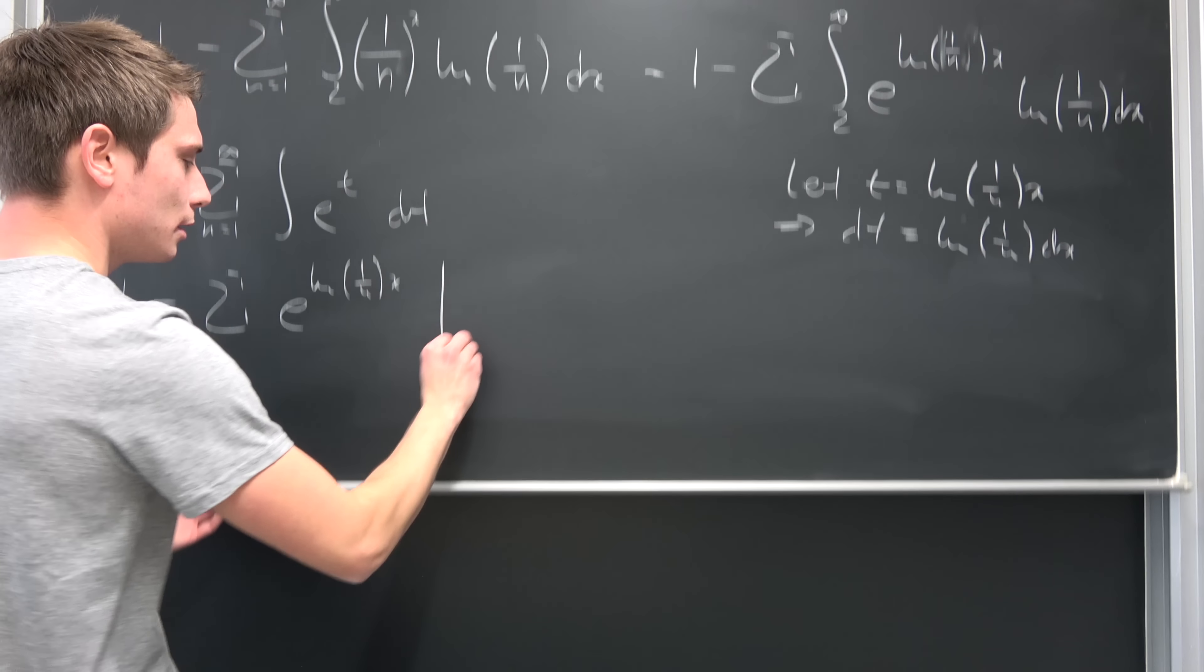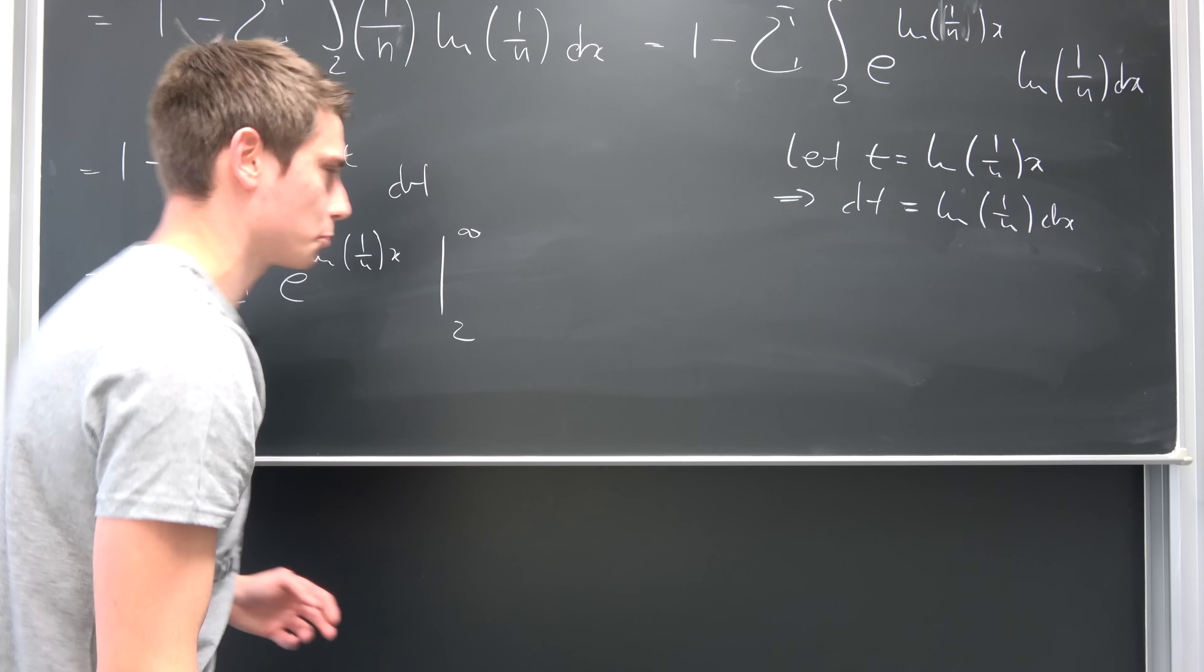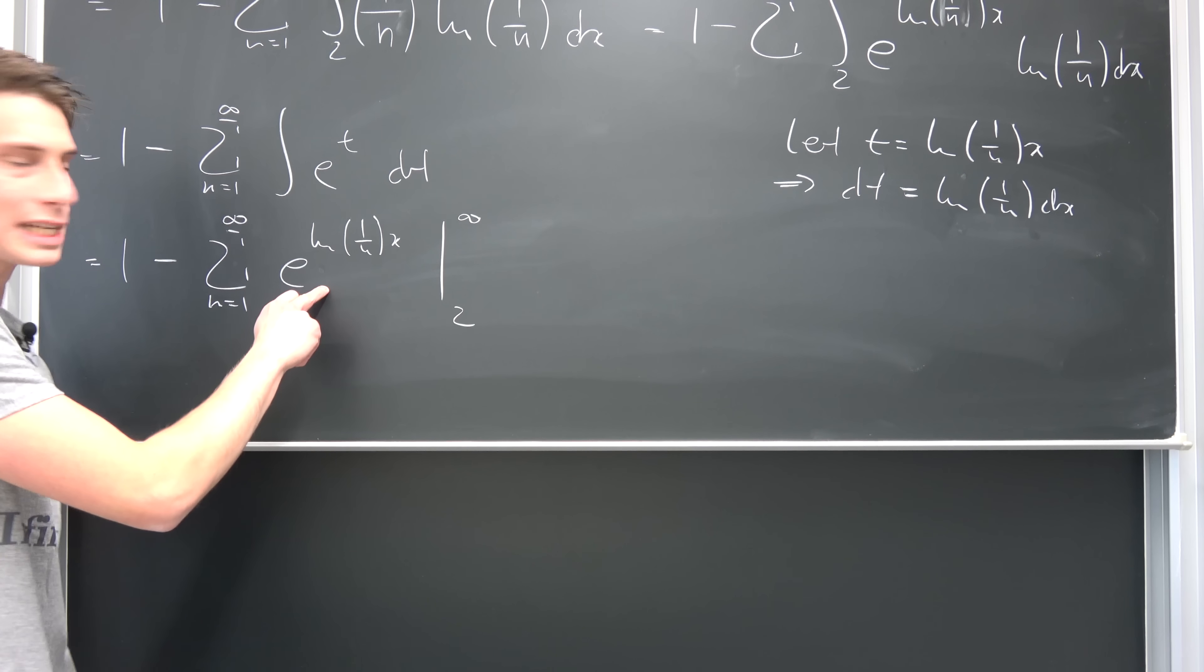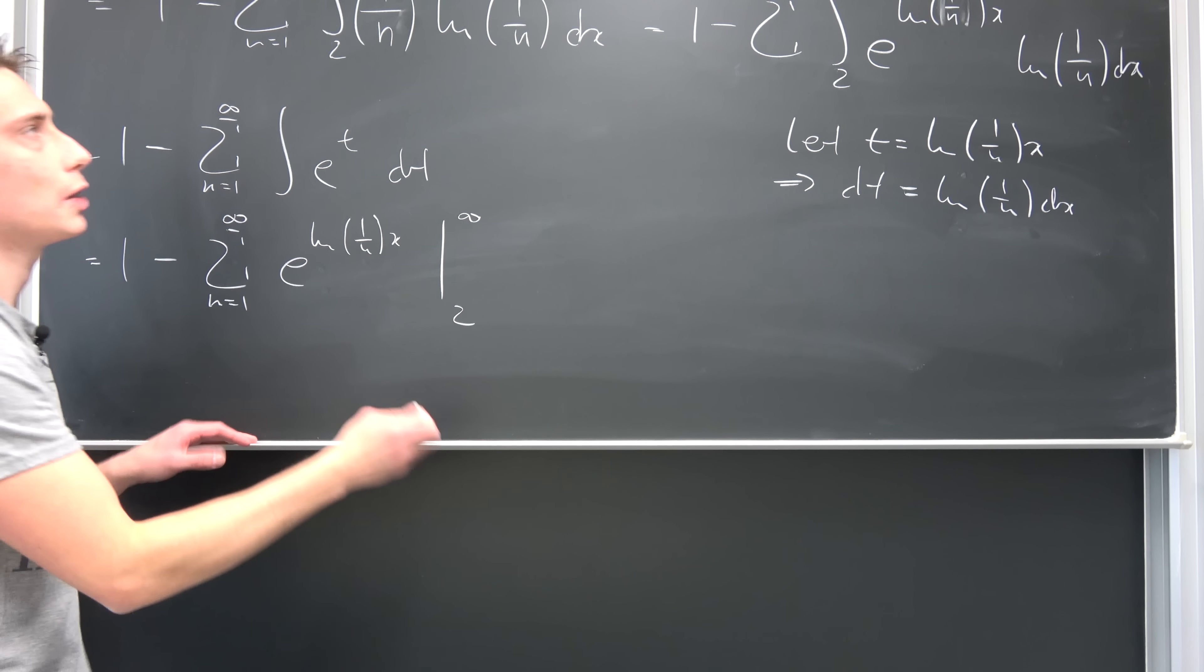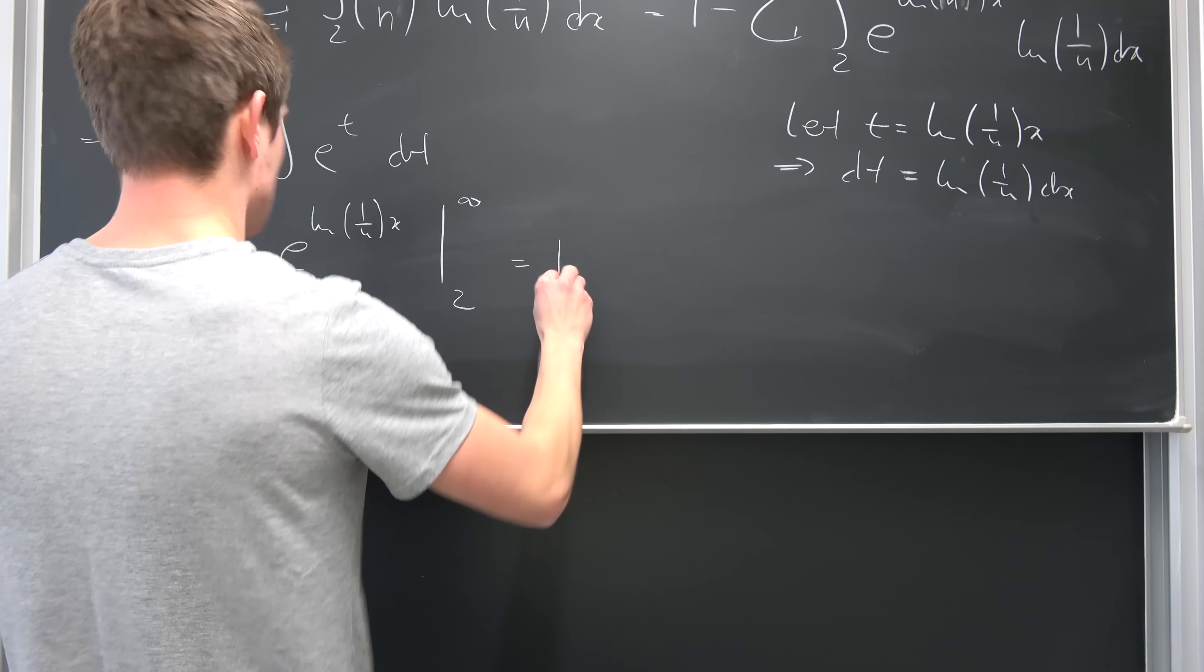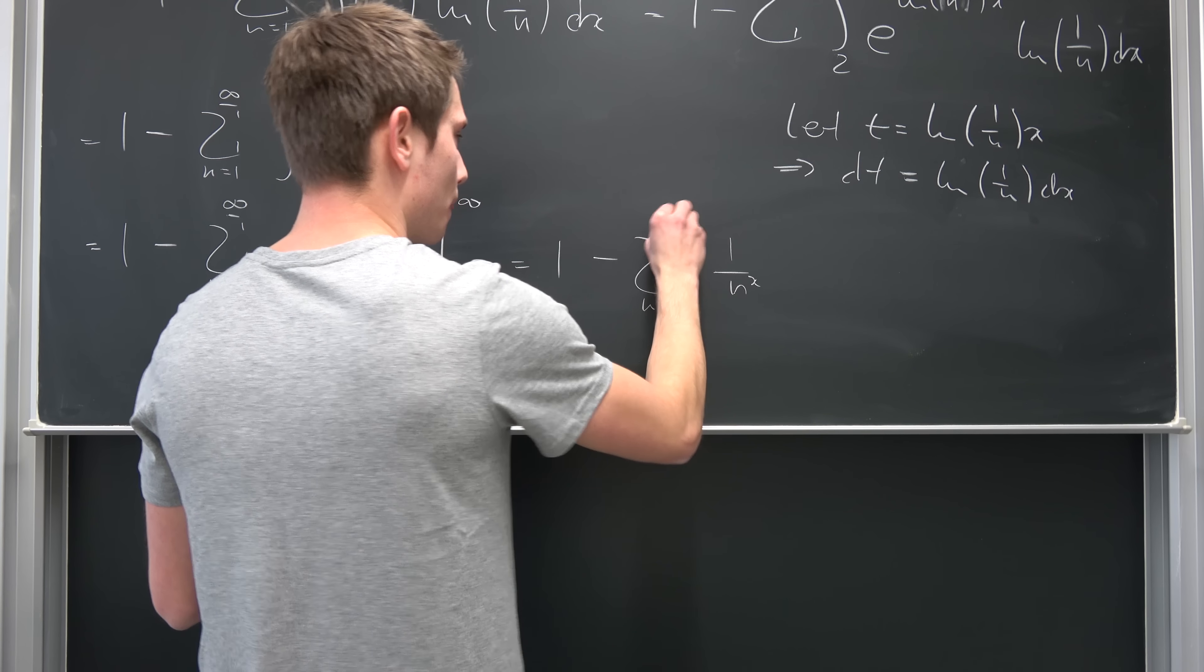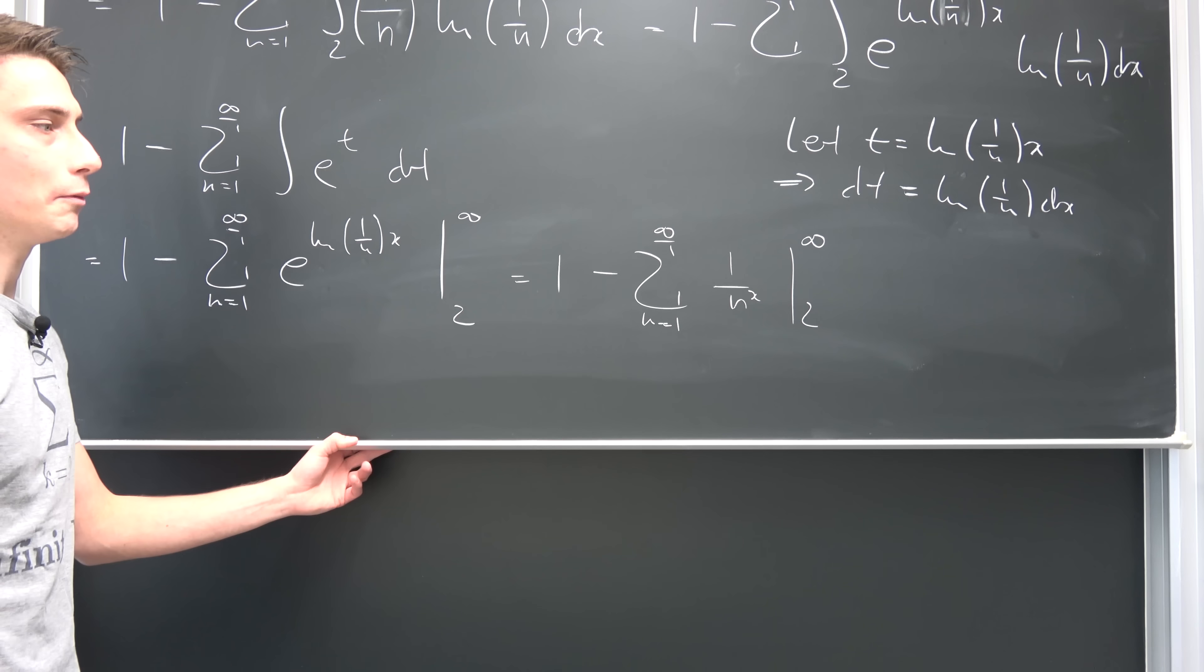From... Okay, now we can plug our original upper and lower bounds in, from 2 to infinity. I thought someone is going to come in, that's why I look this way. I'm terribly sorry. Okay, what are we going to get? So this is from 1 to infinity. Don't forget, e to the natural log of 1 over n times x is nothing but our original 1 over n to the x power. Okay, so this is 1 minus infinite summation of 1 over n to the x power from 2 to infinity.